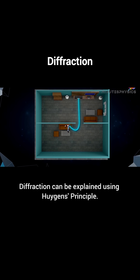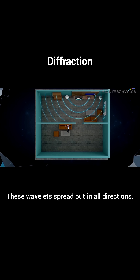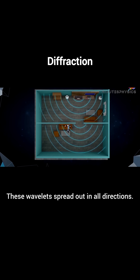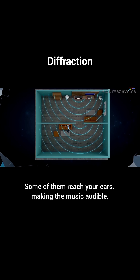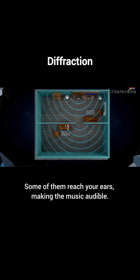Diffraction can be explained using Huygens' principle. According to it, every point on a wave front acts as a source of secondary wavelets. These wavelets spread out in all directions. Some of them reach your ears, making the music audible.